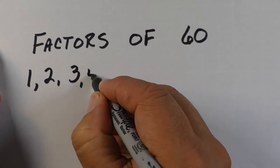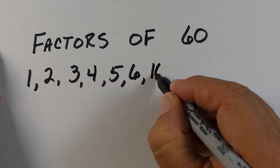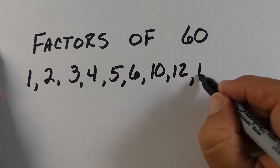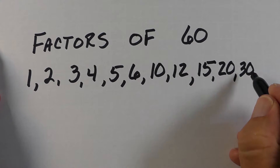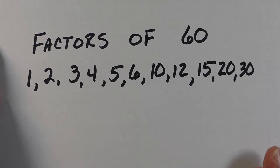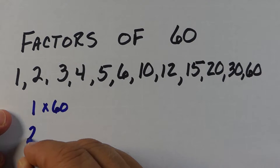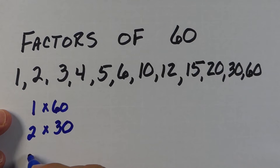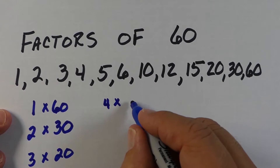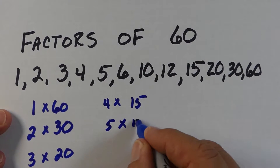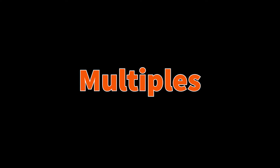Here are a few more examples. Like sixty — you can see all the different factors of sixty: one times sixty, two times thirty, three times twenty, four times fifteen, five times twelve, six times ten. All those numbers are whole numbers that you can multiply together to get sixty, and they all divide evenly into the number sixty.